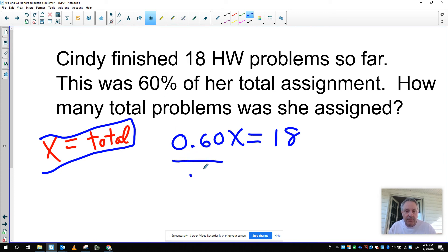To solve this, I'll divide both sides by 0.60. 18 divided by 0.6 gives me 30. So my answer here is X equals 30. So 30 total problems.